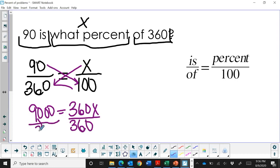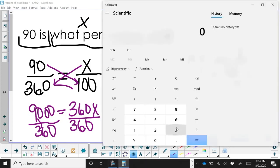So in my calculator, I type in 9000 divided by 360. And that's 25.